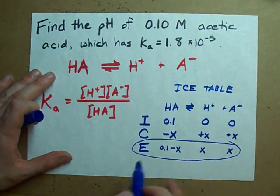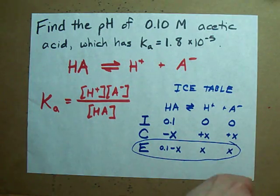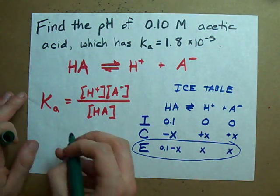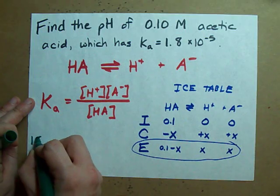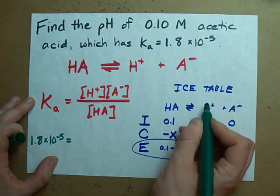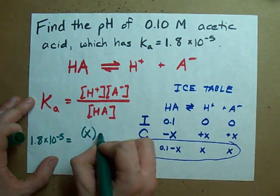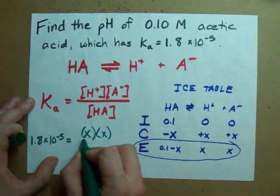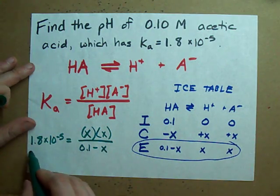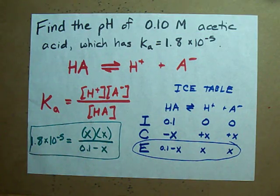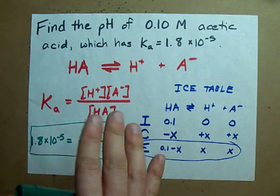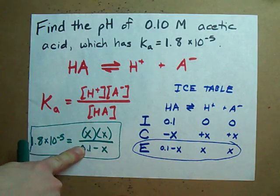These equilibrium concentrations are what get filled into the Ka equation. So, Ka, using the equilibrium concentrations, gives 1.8 times 10 to the negative 5 equals H plus is X, A minus is X, HA is 0.1 minus X. And this is the equation you have to solve in order to find X, which is the concentration of H plus, which is what you need if you're calculating pH. The question is how to solve this.